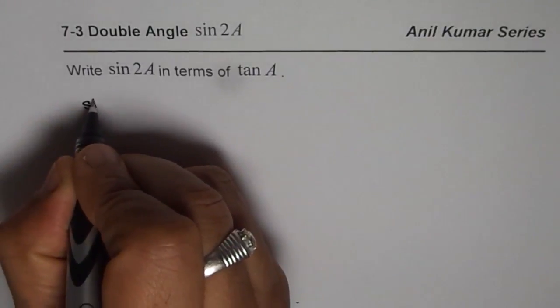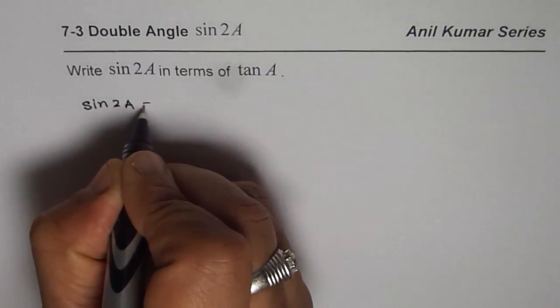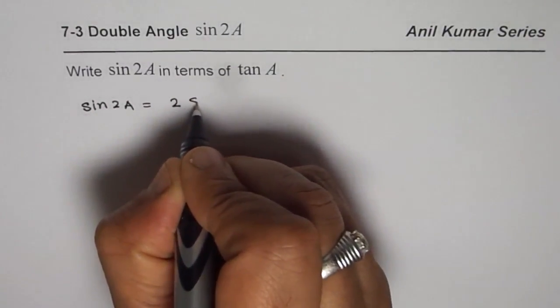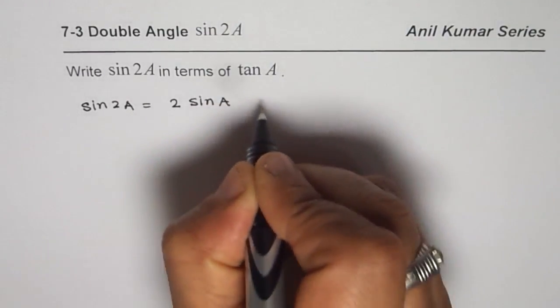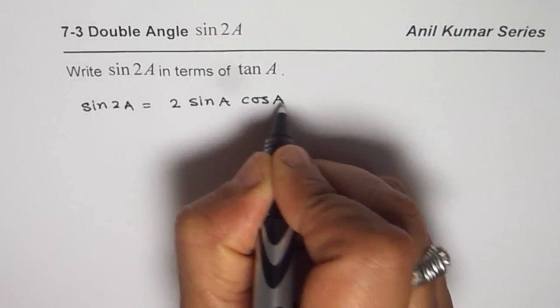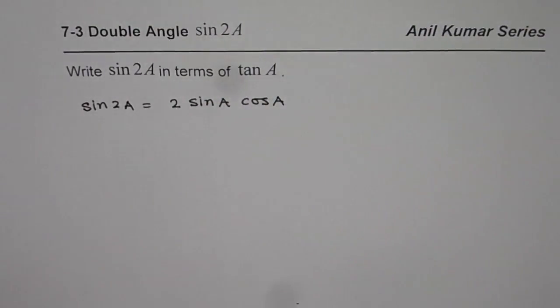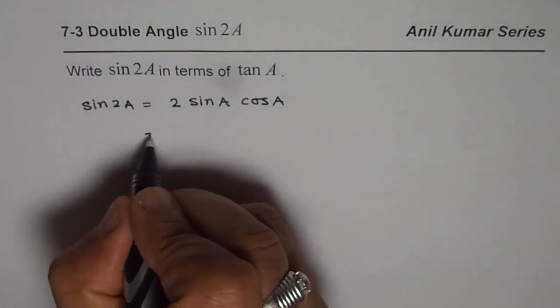What we learned is that sine 2A is basically equal to 2 times sine A cos A. How can you write this as tan A? That is a big question. What we can think about is like this.